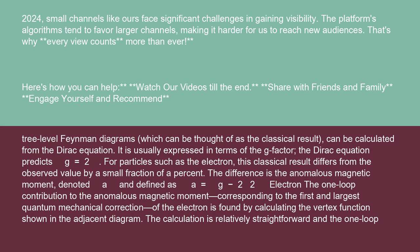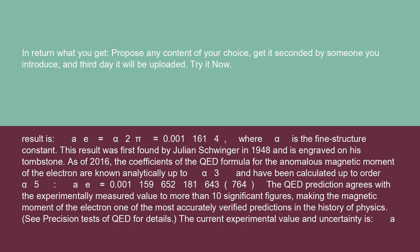The one-loop contribution to the anomalous magnetic moment corresponding to the first and largest quantum mechanical correction of the electron is found by calculating the vertex function shown in the adjacent diagram. The calculation is relatively straightforward in the one-loop.